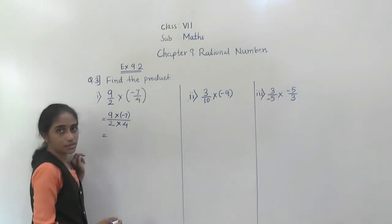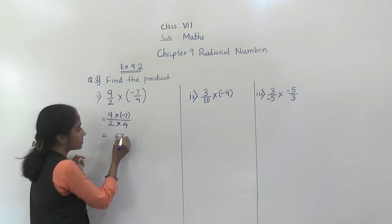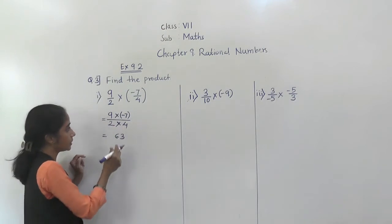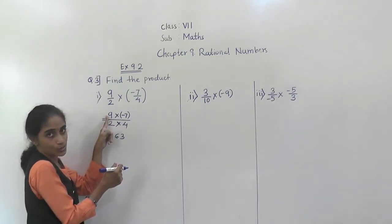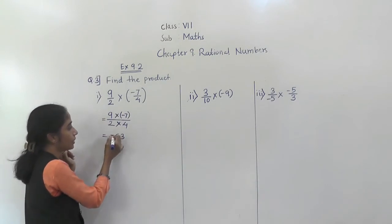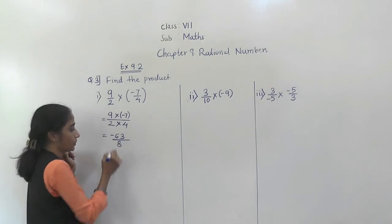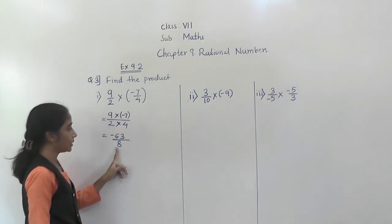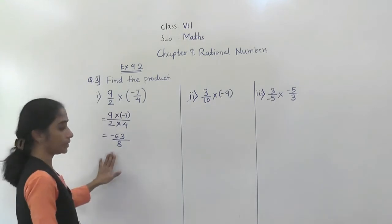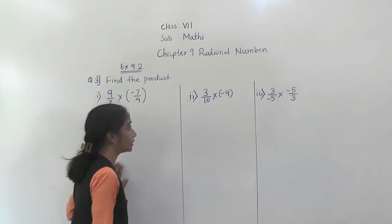9 sevens are 63. Here 9 is positive and 7 is negative, so their product will be negative. 2 fours are 8. So what we got as an answer? Minus 63 upon 8.